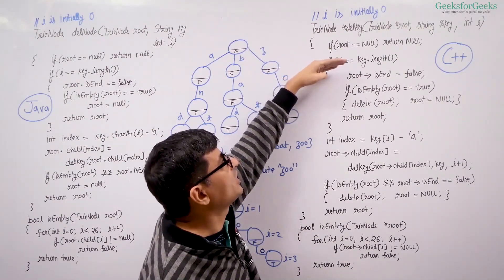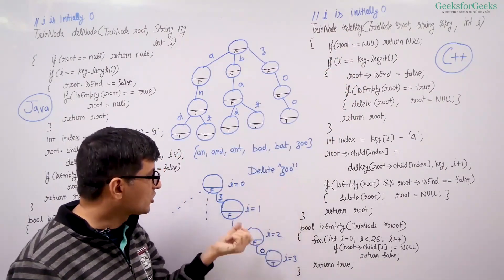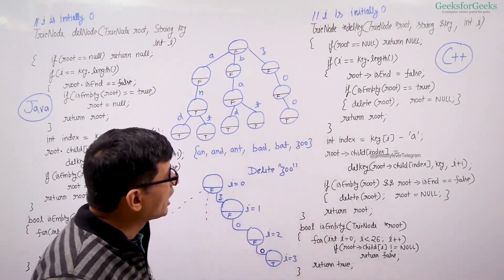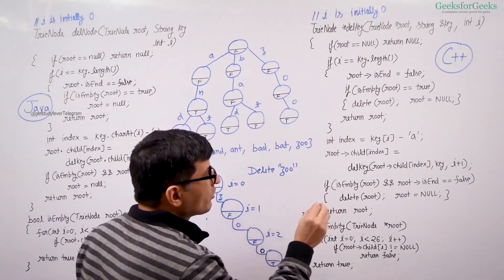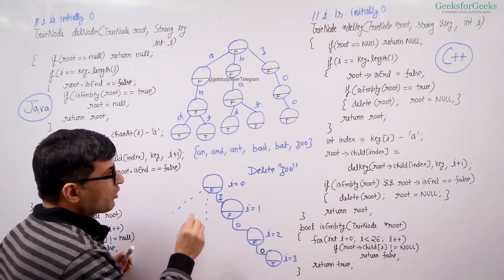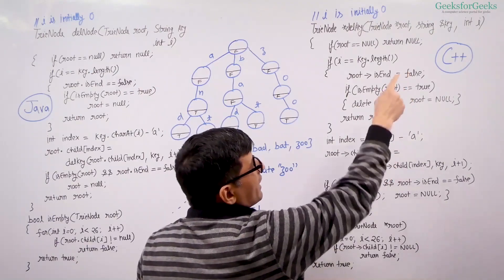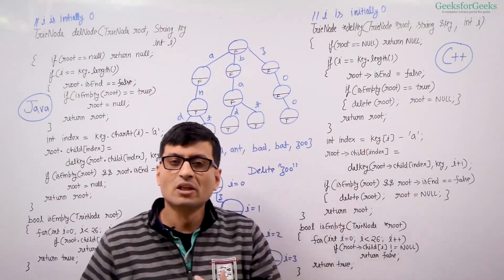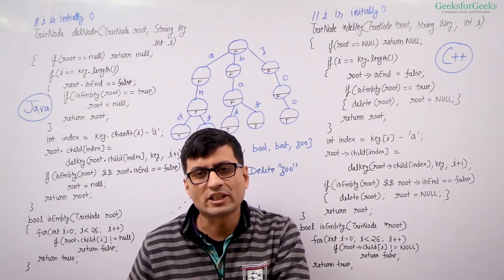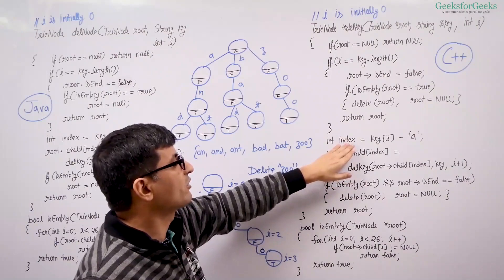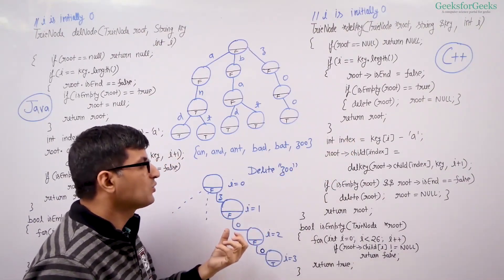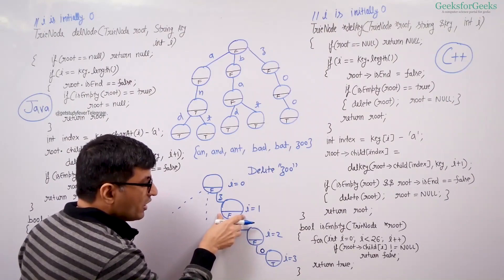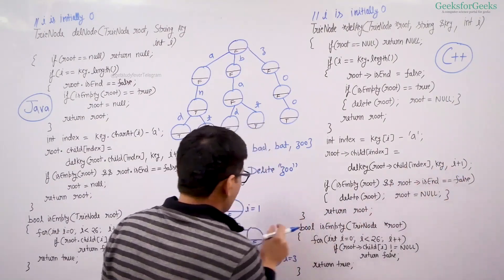Then we check: is i equal to key.length? Key.length is 3, and i is 0, so we do not go inside this if condition. Now we find out the child node where we need to recursively call the delete key function. We go to index i that we have passed as a parameter and subtract the ASCII value of 'a' to find out the index of the child. We find out the index of that particular child, and once we find it we recursively call delete key for that child, passing i as i+1, so our i becomes 1.